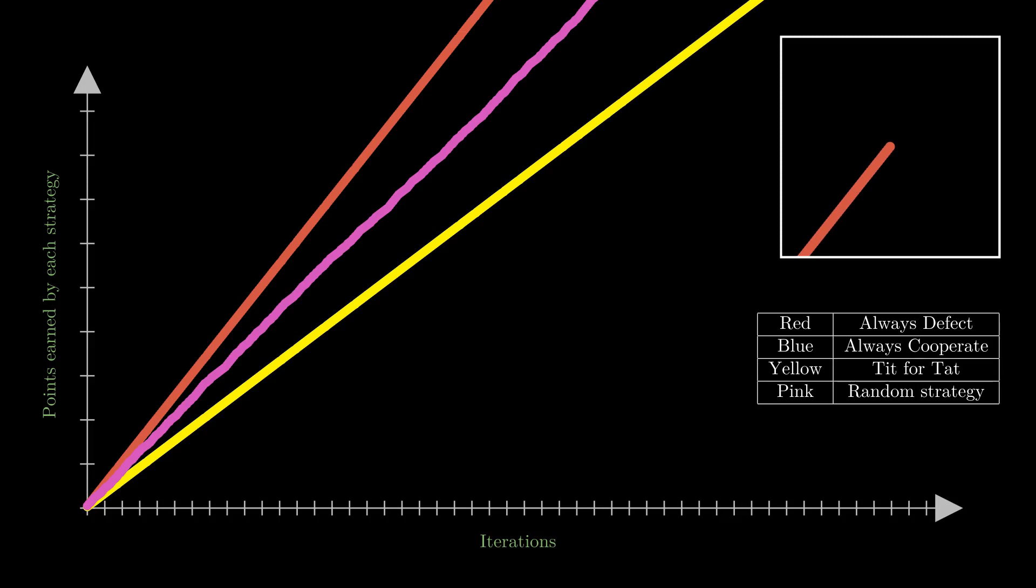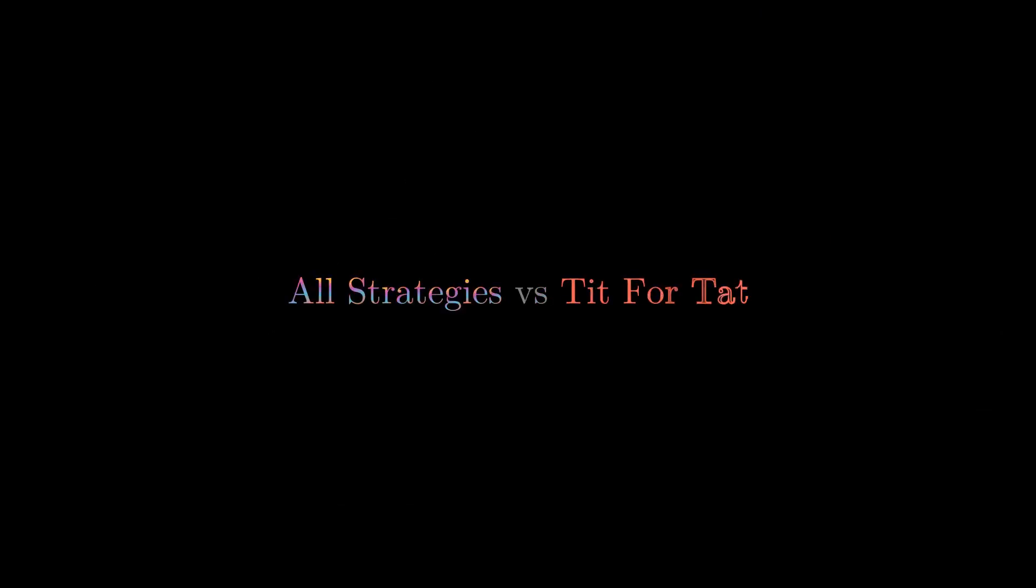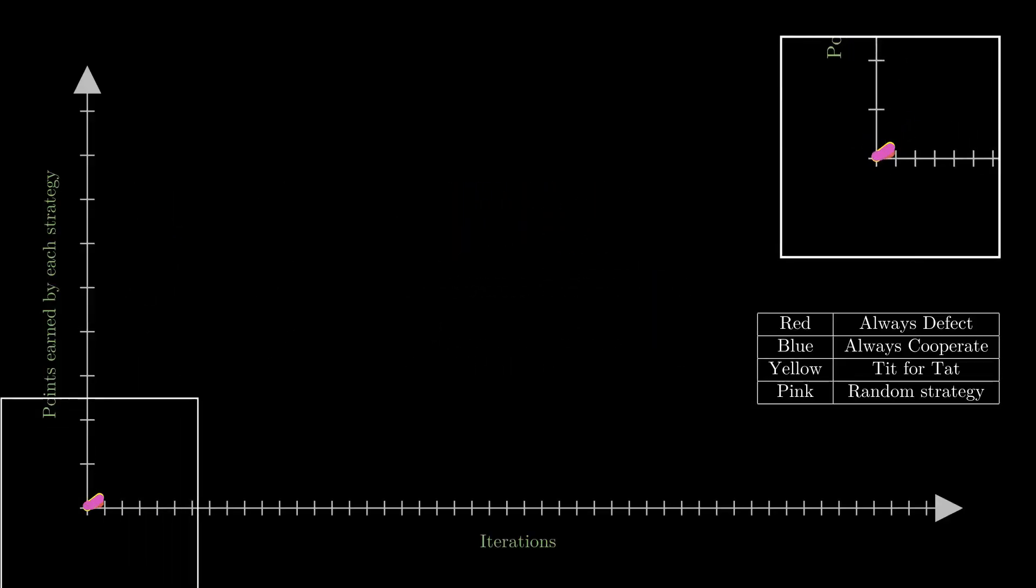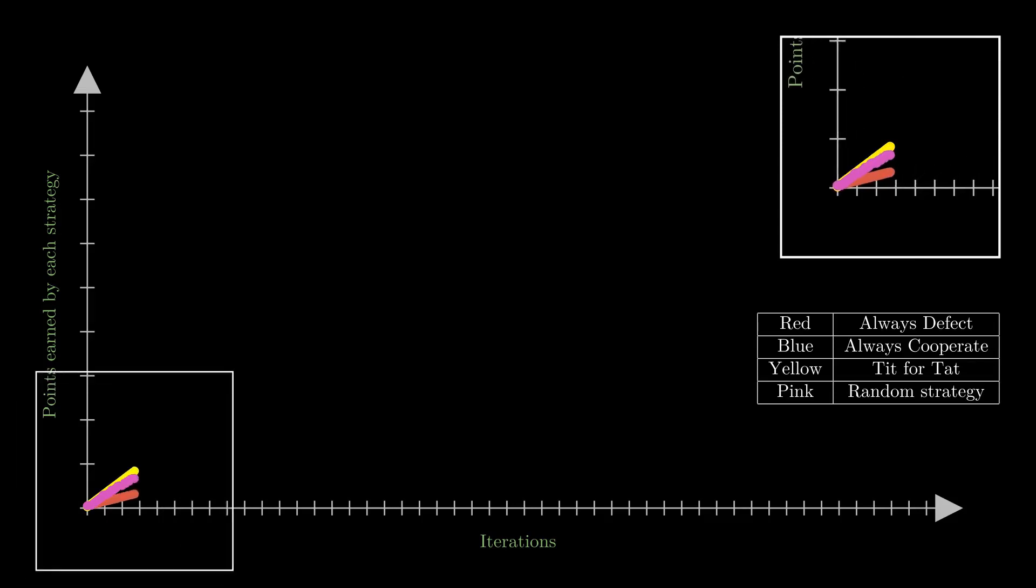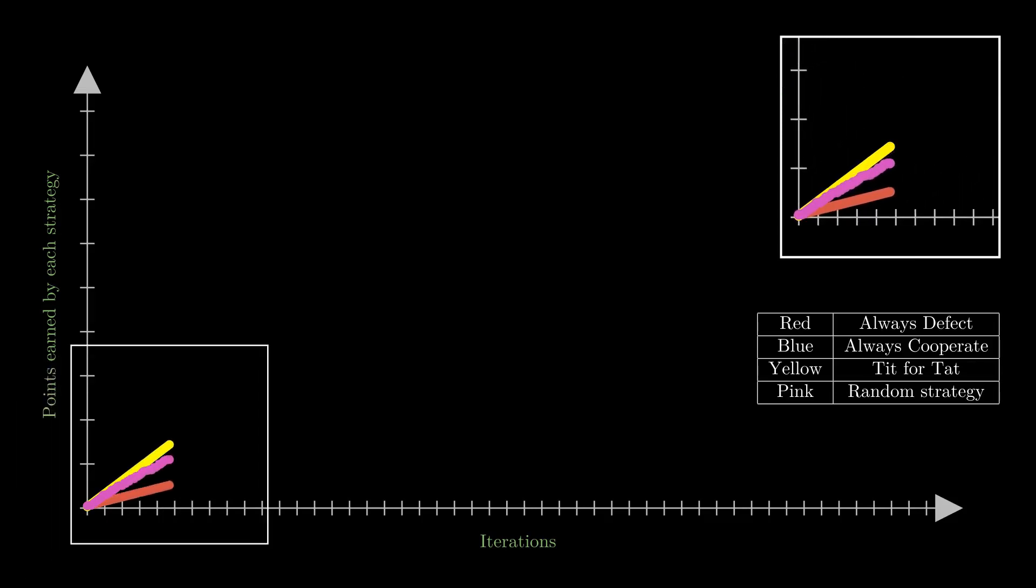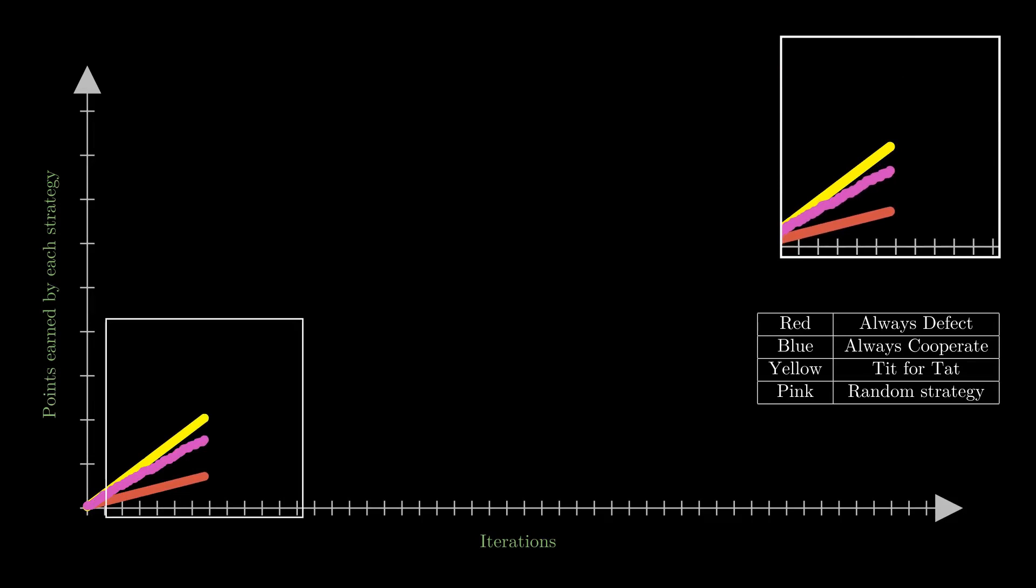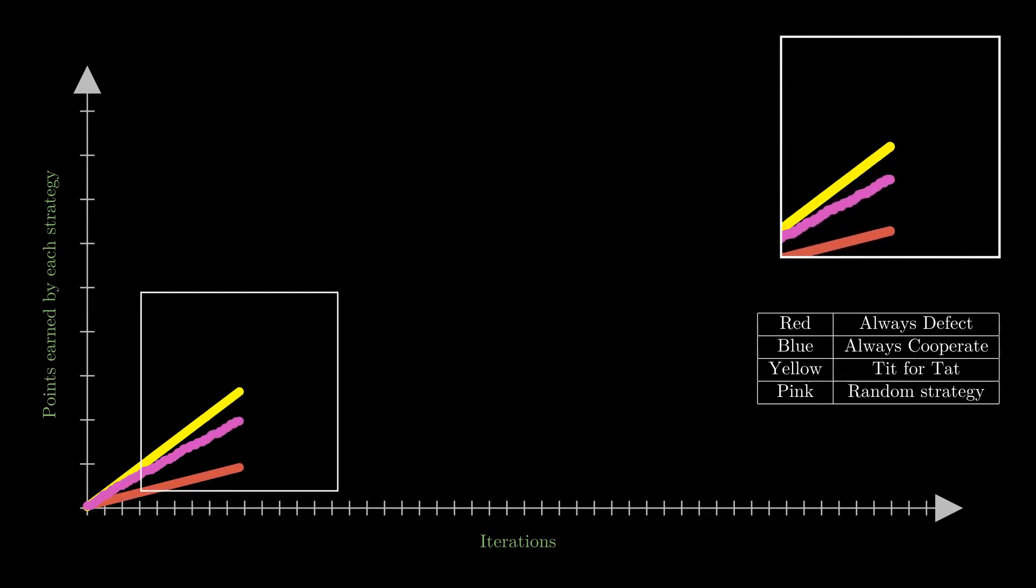Now if you pit tit for tat strategy against all other strategies, you'd expect the tit for tat strategy pitted against itself to behave like a cooperative strategy and indistinguishable from always cooperate strategy. This time around though with defect strategy, tit for tat also acts as a defect strategy. And because reward points for cooperation are higher than punishment for defection, the always defect strategy loses the call this time.